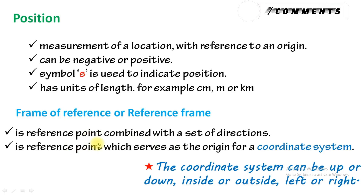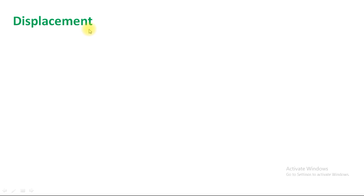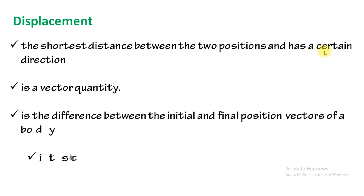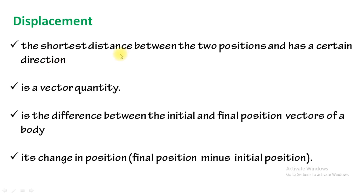The next topic is displacement. Displacement is the shortest distance between two positions and has a certain direction. It is a vector quantity. It is the difference between the initial and final position vectors of a body — that is, a change in position.